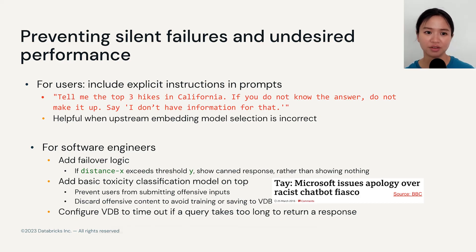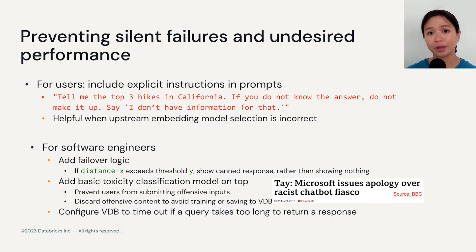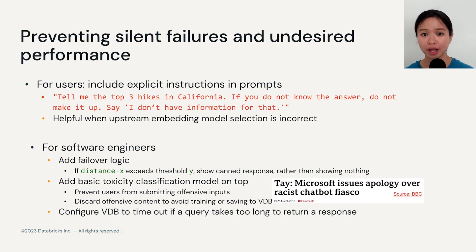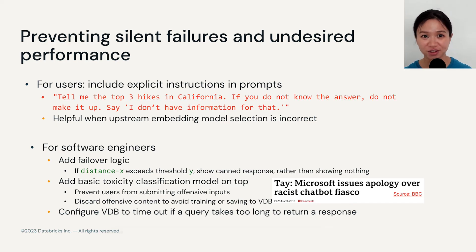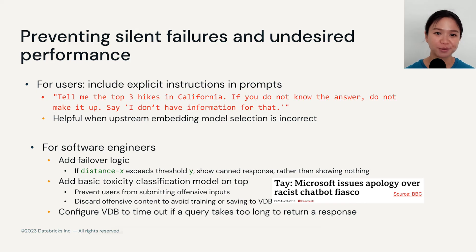For software engineers, there are a few things to consider. First, add failover logic — for example, if the distance exceeds a threshold, show a generic list of responses rather than nothing. Going back to the Nike example, if there are no Nike shoes returned, you can show a generic list of most popular shoes. In terms of toxicity, discrimination, or exclusion, you can add a basic toxicity classification model on top to prevent users from submitting offensive inputs. In 2016, Microsoft released a chatbot called Tay that became a racist chatbot because users submitted racist remarks. Having a guardrail model helps prevent a chatbot from functioning differently than expected, and you can discard offensive content to avoid retraining or fine-tuning on it.